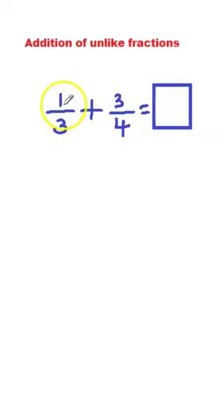Here we are adding the unlike fractions 1 by 3 and 3 by 4. The first step is we have to find LCM for denominators. So LCM of 3 and 4 equal to 12.